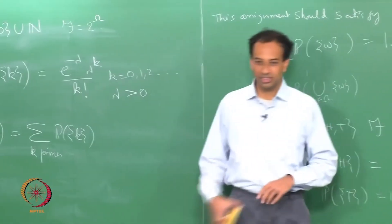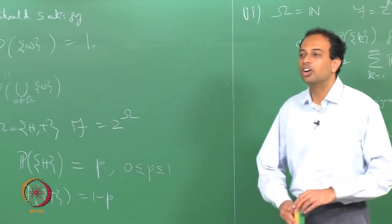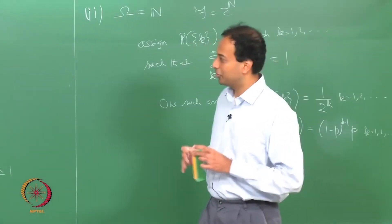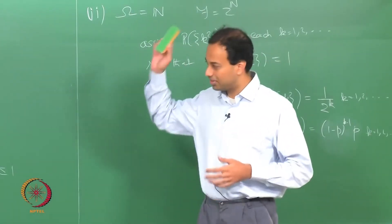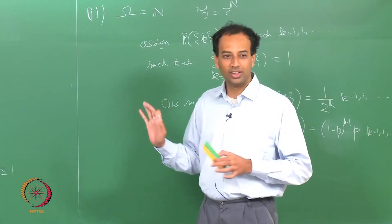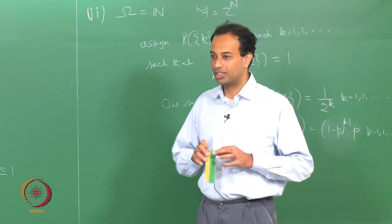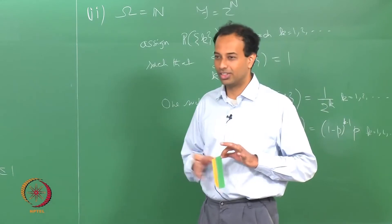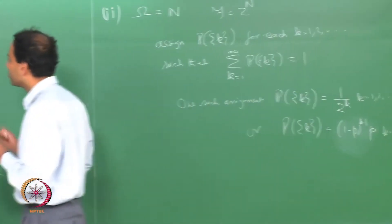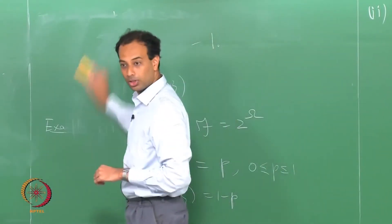When you go to uncountable sample spaces, life is not very easy — that is why you need all the machinery of measure theory. Otherwise, if uncountable sample spaces were as simple, probability theory would be very easy and all this technical machinery of measures and sigma algebras would not be necessary. Shall we move on to uncountable sample spaces?